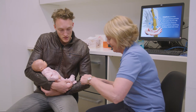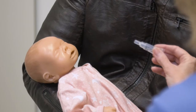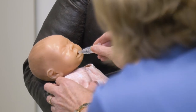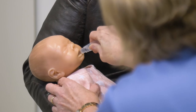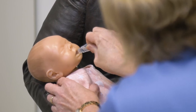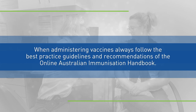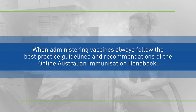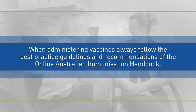To administer the rotavirus vaccine, seat the child leaning slightly backwards. Squeeze the liquid gently into the side of the child's mouth towards the inside of their cheek. You may need to squeeze the tube a few times to get all of the vaccine out — it's okay if a drop remains in the tip of the tube. When administering vaccines, always follow the best practice guidelines and recommendations of the Online Australian Immunisation Handbook.